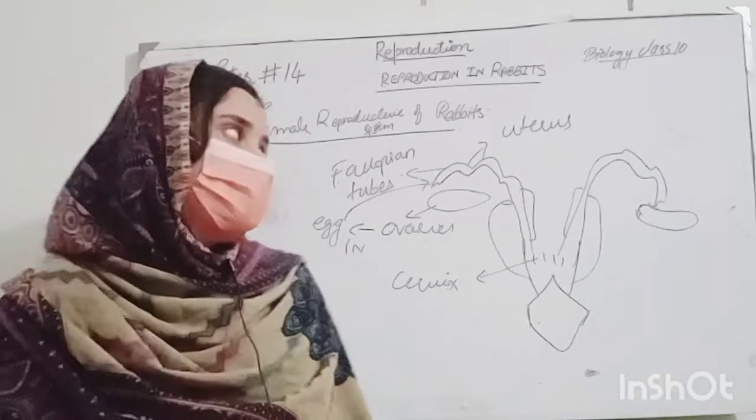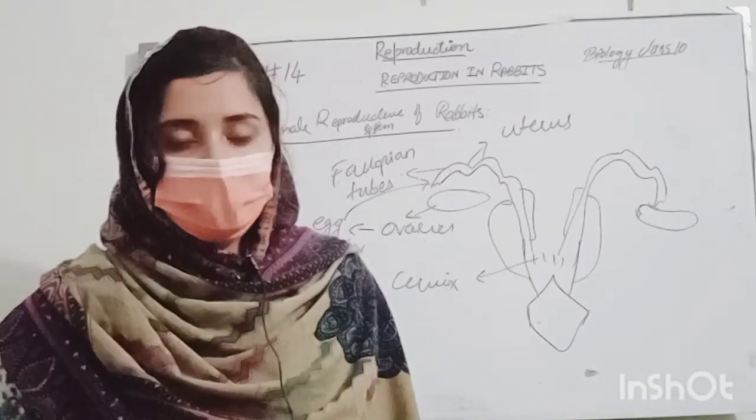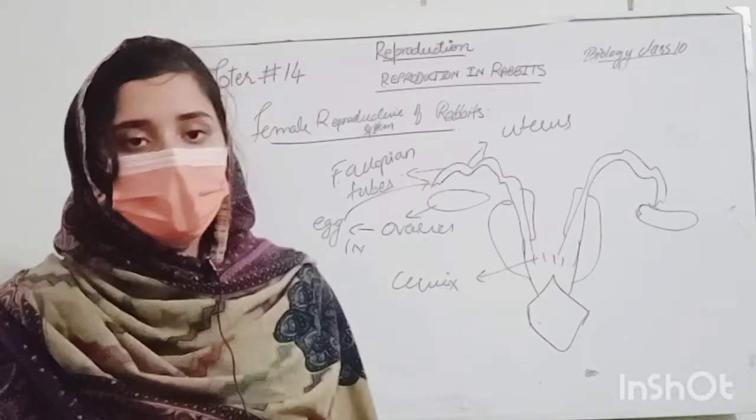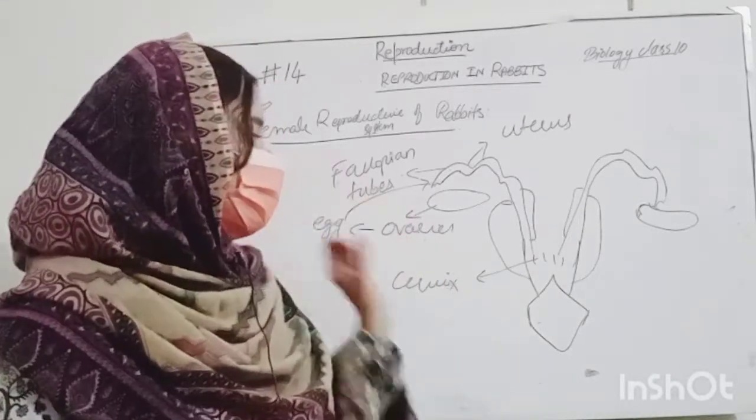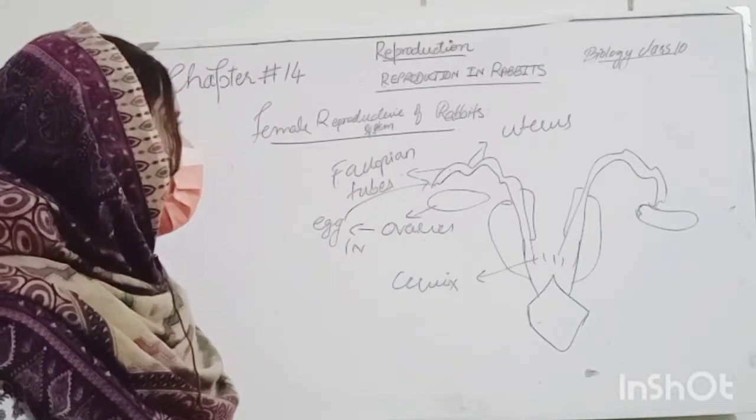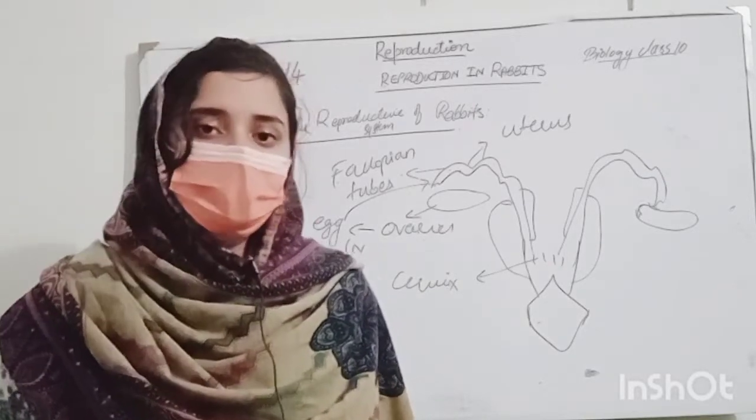But in this case, the male reproductive system and female reproductive system is a long question that you can ask for the exam and write a note on male reproductive system, then you can draw the diagram and write a note on female reproductive system, then you can draw the diagram and the structures. So students, this was our reproduction in rabbits, so our chapter of reproduction has been completed. Thank you very much.